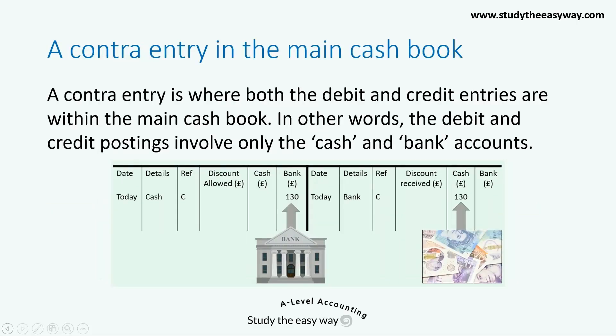A contra-entry is where both the debit and credit entries are within the main cash book. In other words, the debit and credit postings involve only the cash and bank accounts.